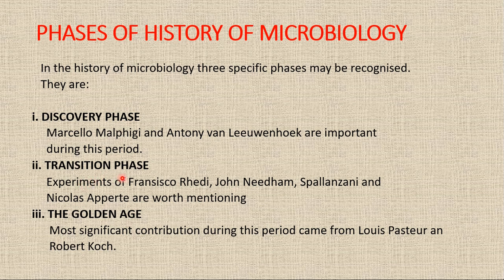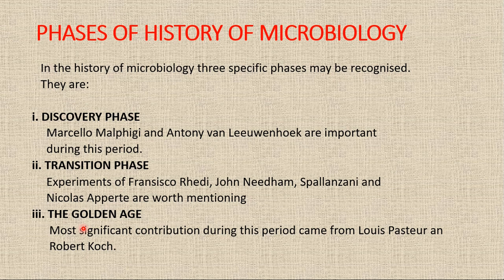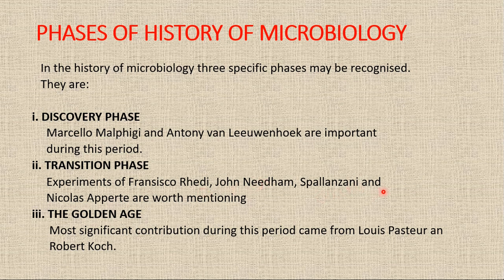Moving to the transition phase, the transition period in the development of microbiology coincides with a great controversy regarding the origin of microbes. The controversy arose from the opinion that life arises spontaneously from a non-living source — that is, an abiogenetic origin of life — as one can see in the sudden appearance of tiny maggots, worms, and flies from nowhere on decaying organic matter. The experiments of Francesco Redi, John Needham, Spallanzani, and Nicolas Appert are worth mentioning in this transition phase, relating to the theory of biogenesis.